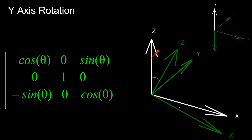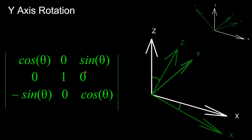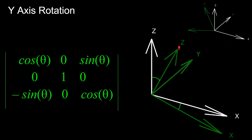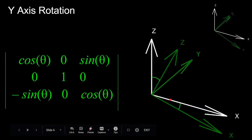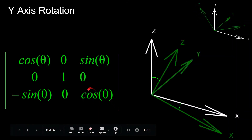For the third column vector of the Y rotation matrix, we get the coordinates of the new Z axis: sine theta, 0, cosine theta. Since it's rotating about the Y axis, the Z vector has no component in the Y direction, so its Y component is 0. Drawing a triangle and projecting the new Z axis down to the original X axis shows an X coordinate of sine theta and a Z coordinate of cosine theta.